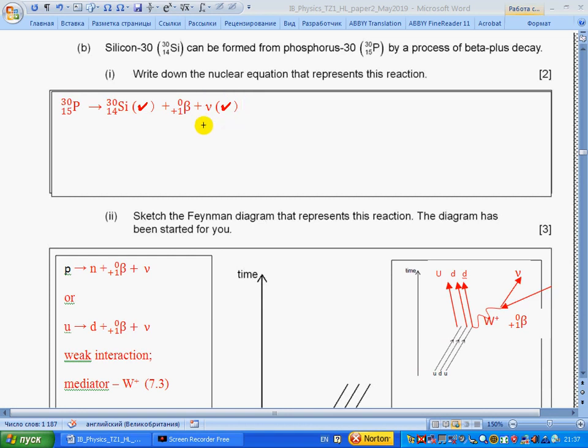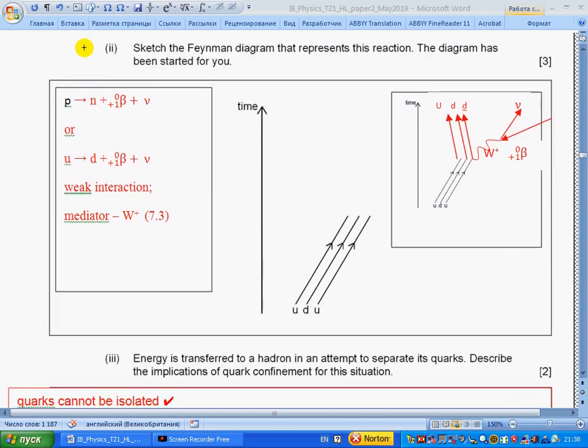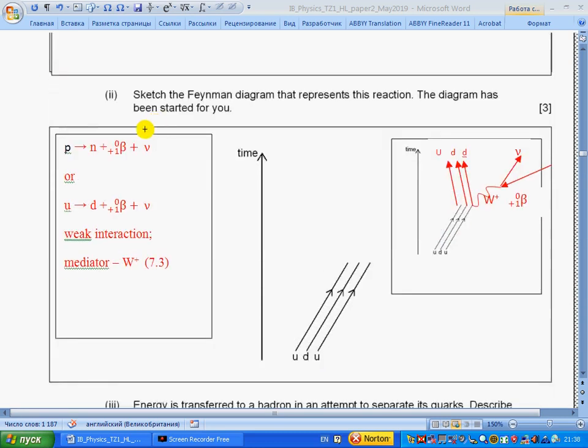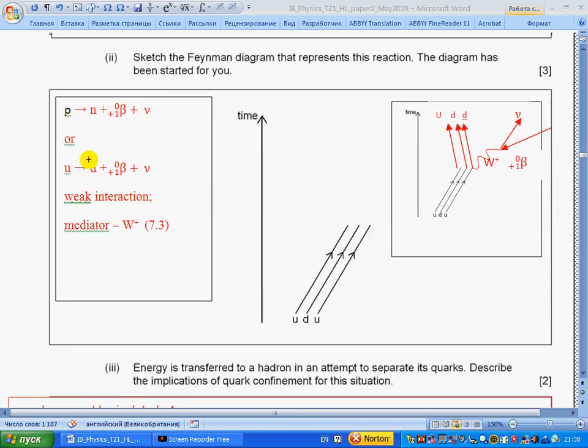Show that beta-plus has charge zero and nuclear number charge plus one and nuclear number zero. The rest is given, so we write the equation. Part ii: The Feynman diagram that represents this reaction. First of all, this process of beta-plus decay can be simplified to decay of a proton, or even more simplified by decay of an up quark into a down quark. The up quark experiences weak interaction, so we need a mediator. The mediator will be, according to section 7.3, W boson plus.